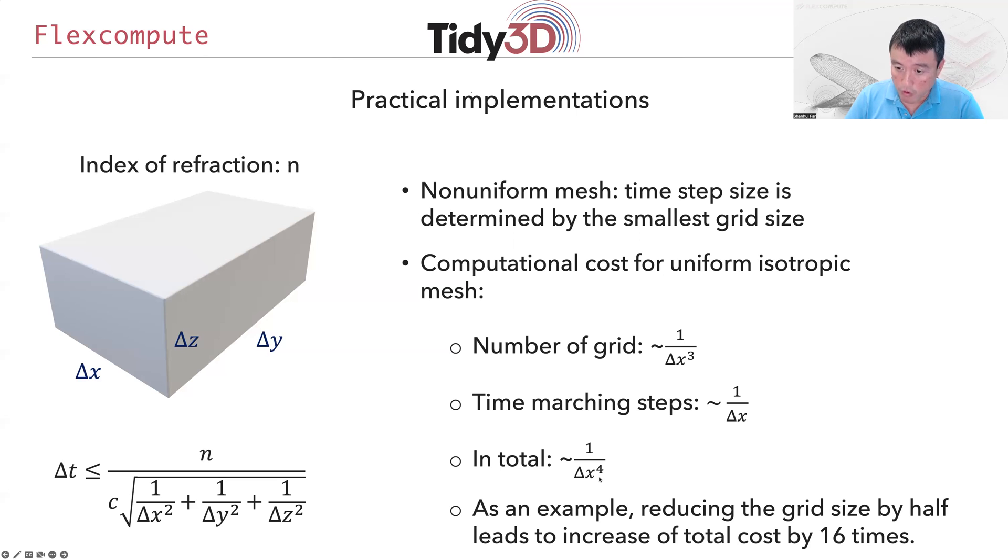As an example, if you want to test convergence or want finer spatial resolution and decide to reduce the grid size by half—making the resolution finer by a factor of 2—that actually leads to an increase of total computational cost by 16 times if you keep the temporal duration the same. Out of the 16, 8 comes from the grid points increasing by a factor of 8, but there's also a factor of 2 from having to reduce the time step. The choice of time step and spatial resolution strongly influence how you control your temporal dynamics.